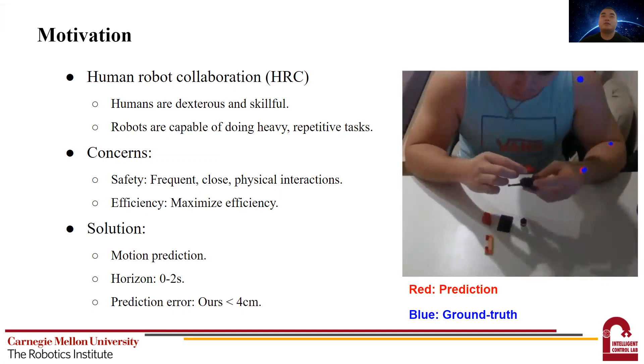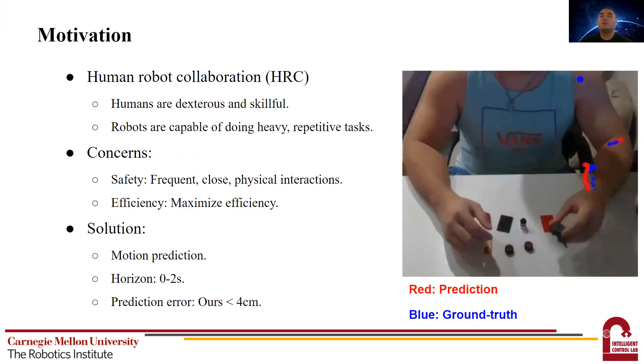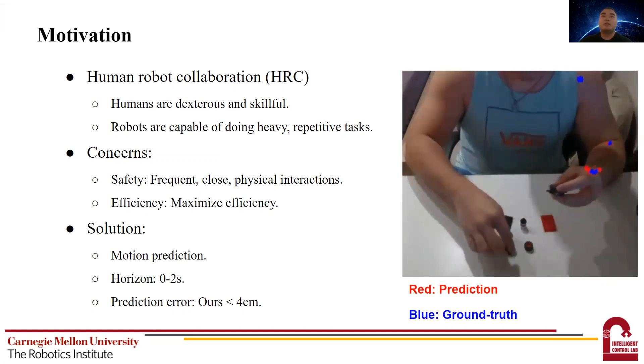On the right, it's a video showing a qualitative result of our prediction. In our research, we aim to predict the human motion within the future 2 seconds, and we target to have the prediction error below several centimeters.